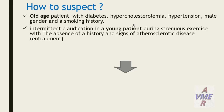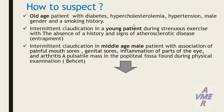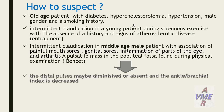Intermittent claudication in young patients during strenuous exercise with absence of history and signs of atherosclerotic disease. Intermittent claudication in middle-aged male patients with association of painful mouth ulcers, genital ulcers, inflammation of parts of the eyes, and arthritis — and a pulsatile mass in the popliteal fossa found during physical exam may indicate this disease.